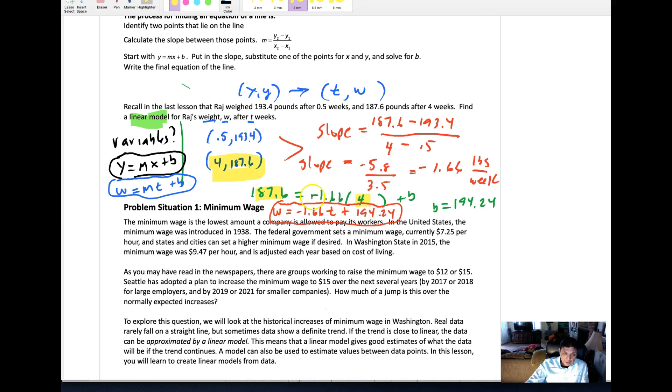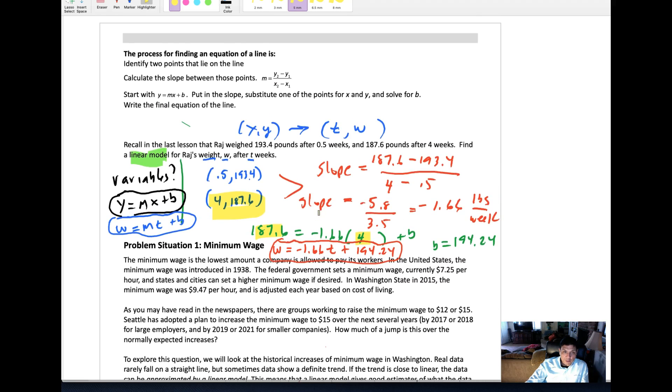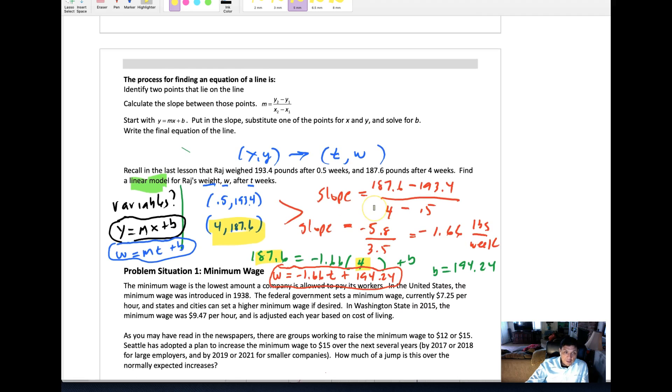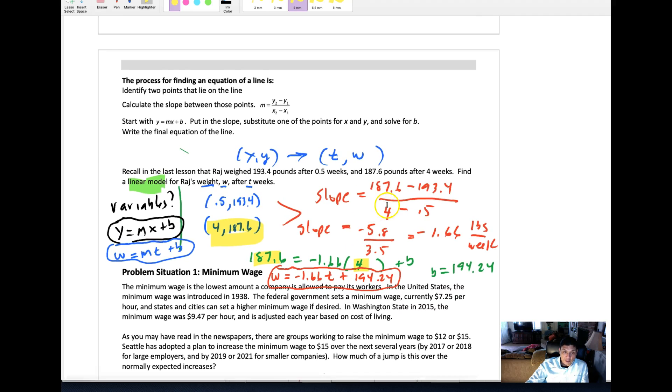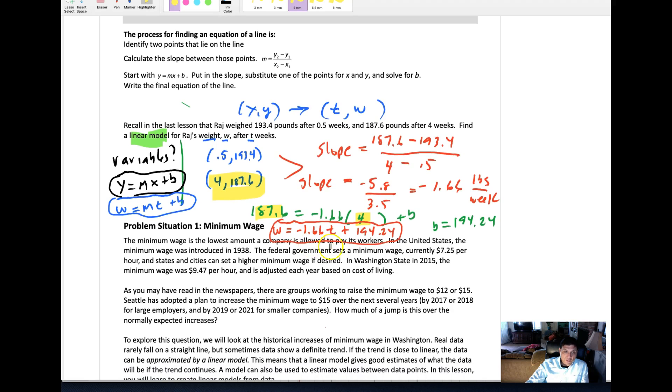After you have the slope, you substitute in one of your points—for example, I took this one here and put it into the general equation and solve for B. When you do your algebra here, you end up with 194.24. So you end up with a linear equation. Now what we're doing is using algebra to find these linear equations or models for these situations.